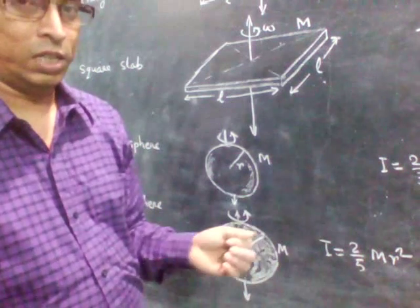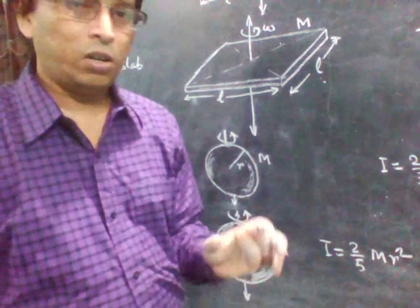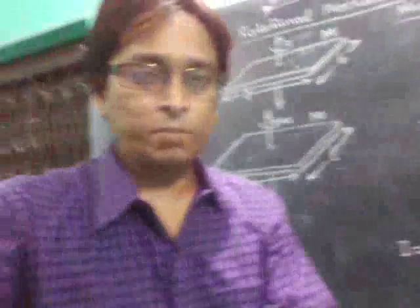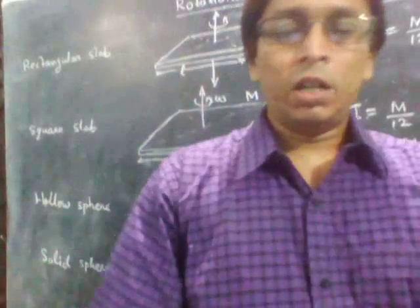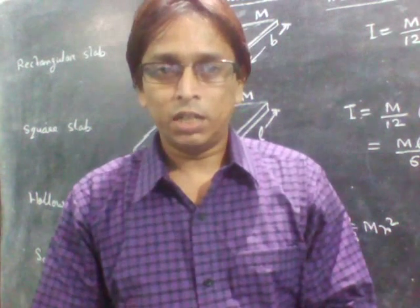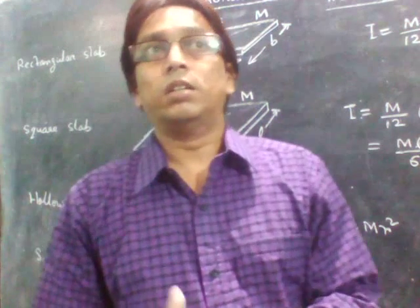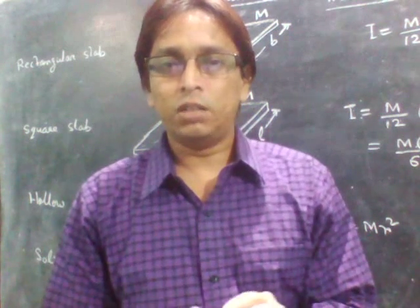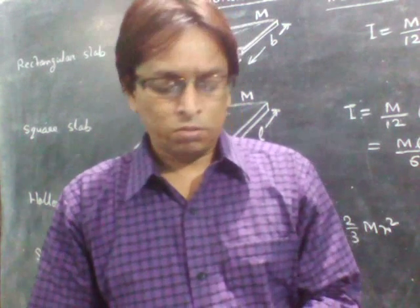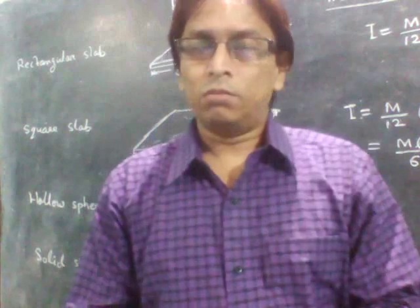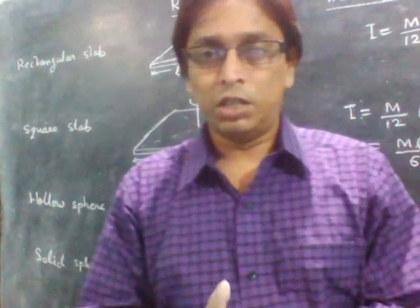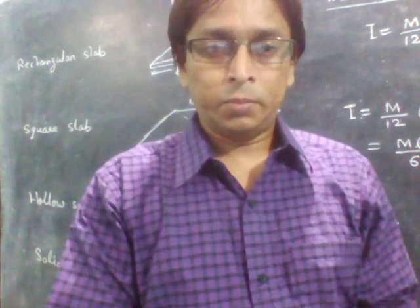So you have to memorize all these things. So moment of inertia of every rigid body, that we have to remember. This is required because we have to just apply this moment of inertia. But I will find the moment of inertia of a solid sphere. Because this may be required in some of your course works. So that I will do. So the derivation of moment of inertia, that is 2 by 5 M R square for a solid sphere, that I will derive.